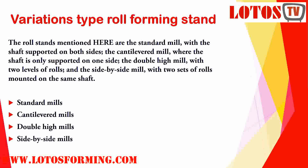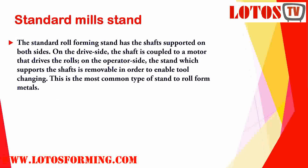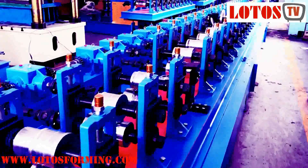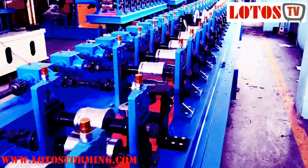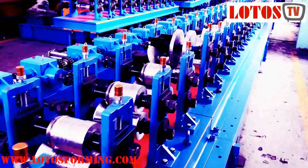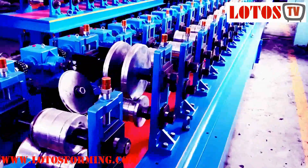Firstly, we will explain about standard mills. The standard mill roll forming stand has the shaft supported on both sides. On the drive shaft side, the shaft is coupled to the motor that drives the rolls. On the operator side, the stand supporting the shaft is removable in order to enable tool changing. This is the most common type of stand for roll forming — one side driven by motor, gearbox, or chain, and one side where rollers can be changed.